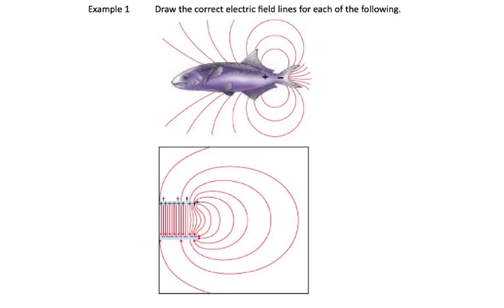So if we're going to draw lines on this fish, we would draw lines this way, and same on the other side. Field lines always go from positive to negative.